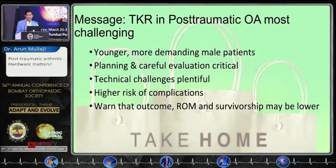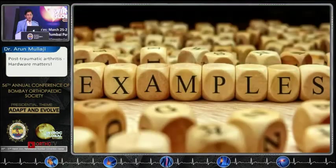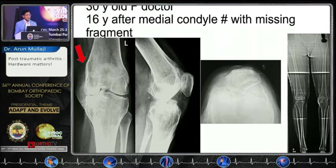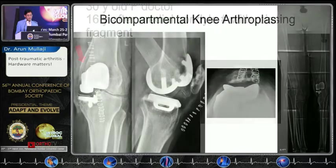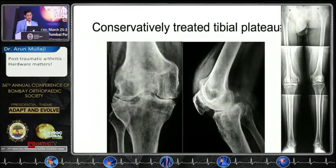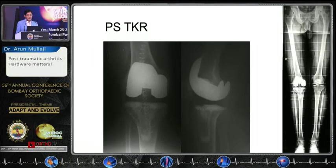First case: a 30-year-old doctor, 16 years after a condyle fracture — the condyle went missing — presenting with severe pain. We performed a bicompartmental knee arthroplasty. The next was a conservatively treated tibial plateau fracture with no major deformity, managed with a straightforward PS total knee.